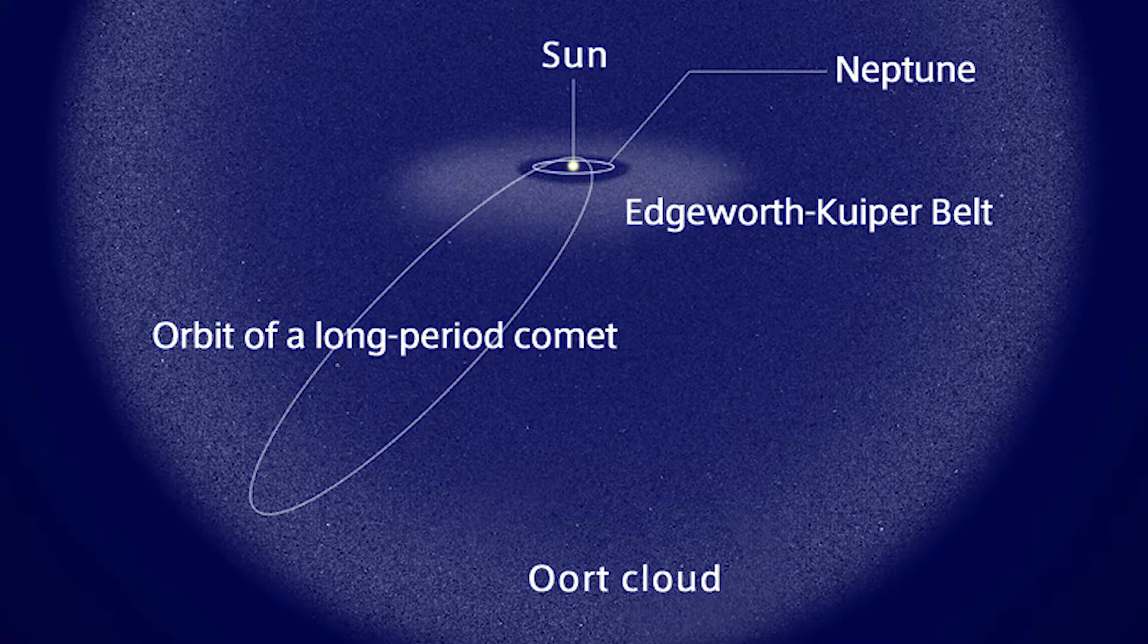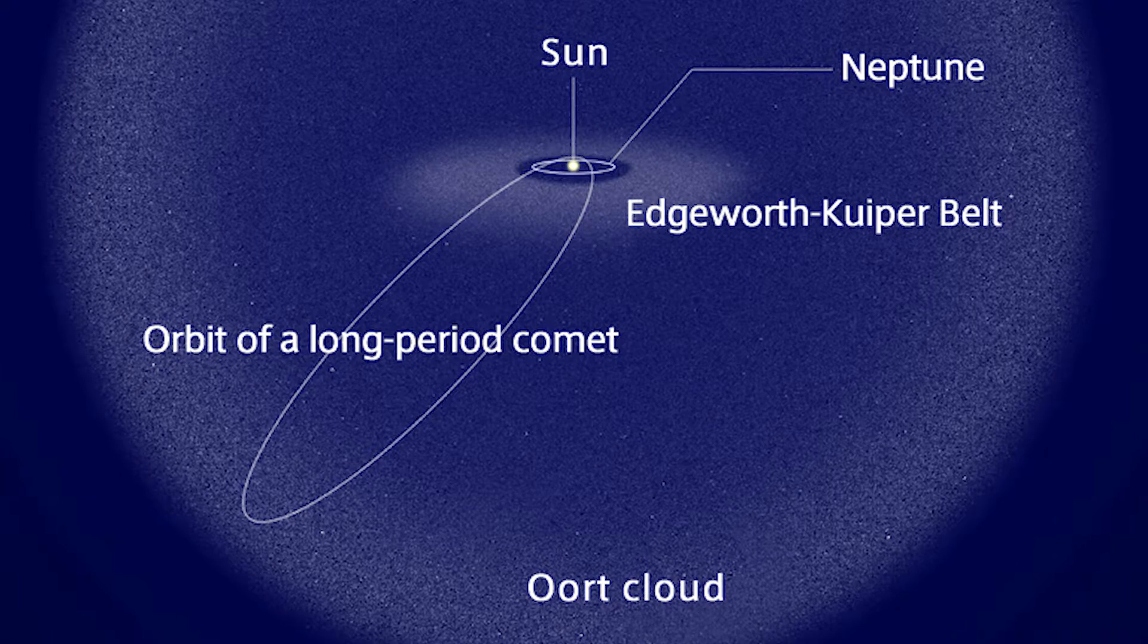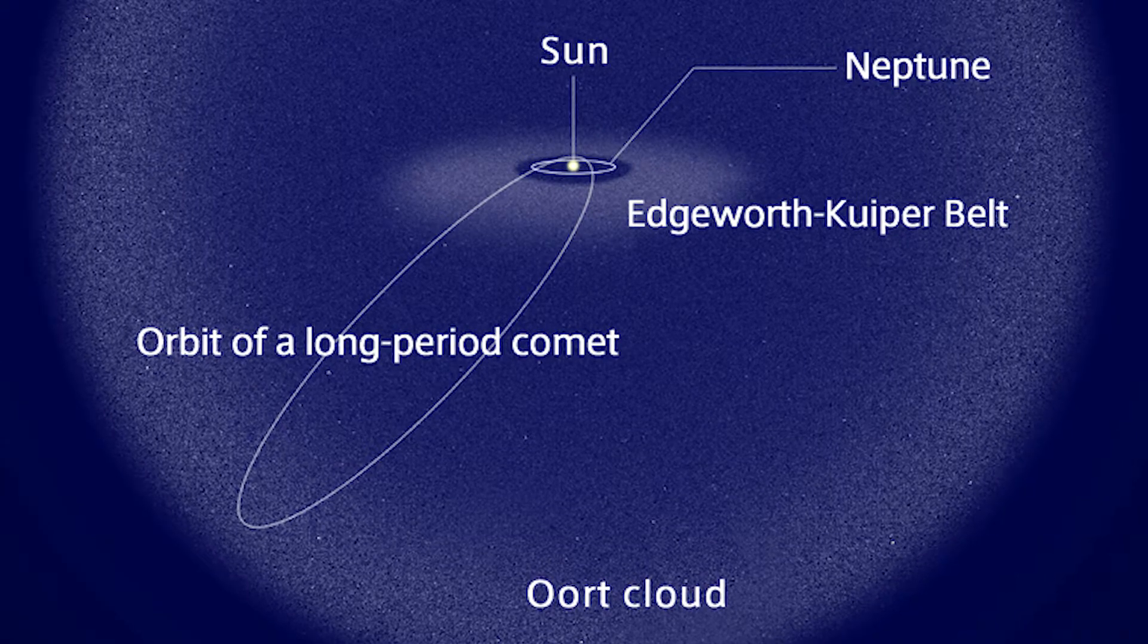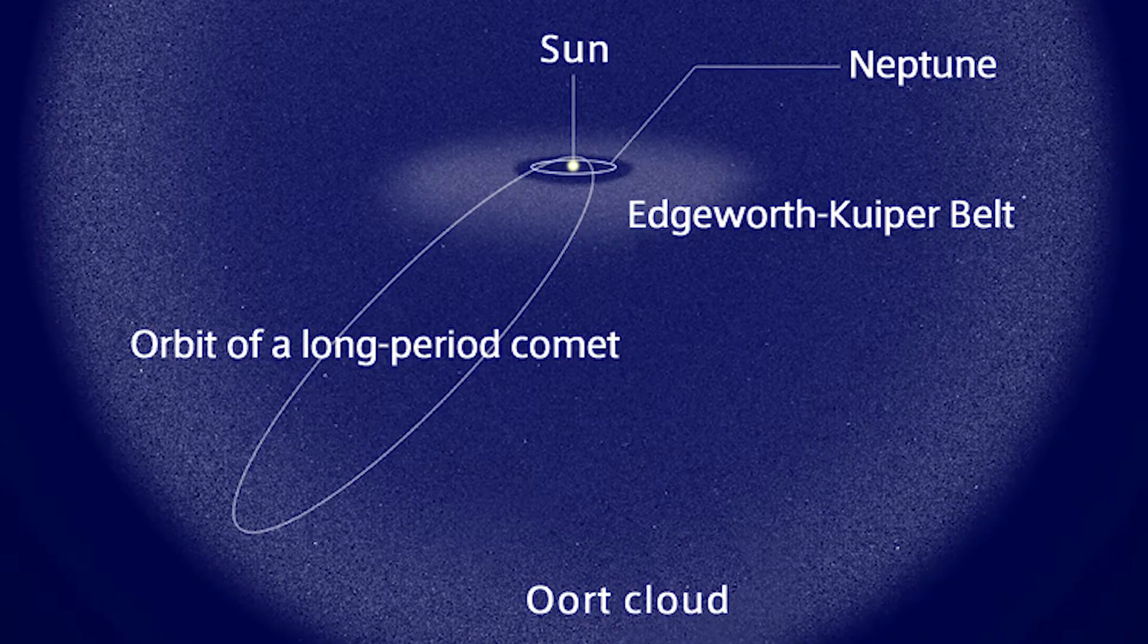This led Jan Oort to suggest that a comet could not have formed while in its current orbit and it must have been held in an outer reservoir far, far away for almost all its existence.